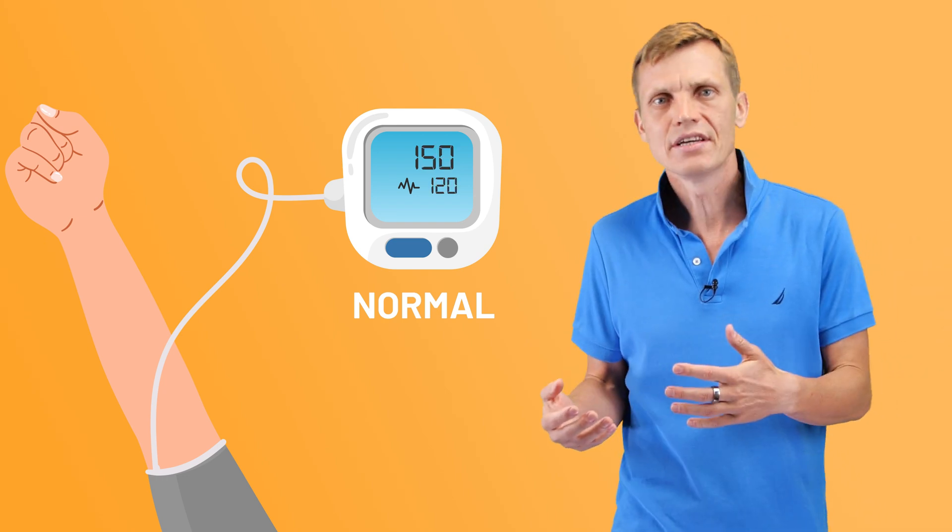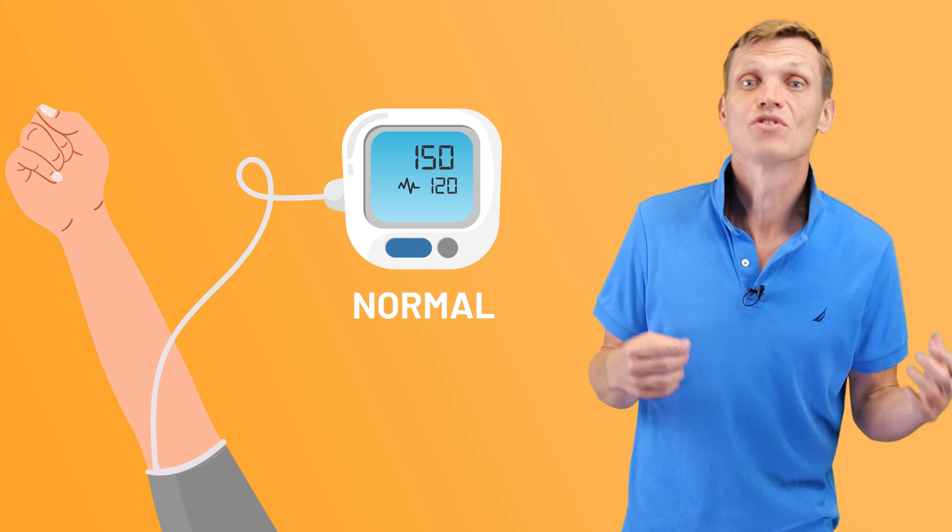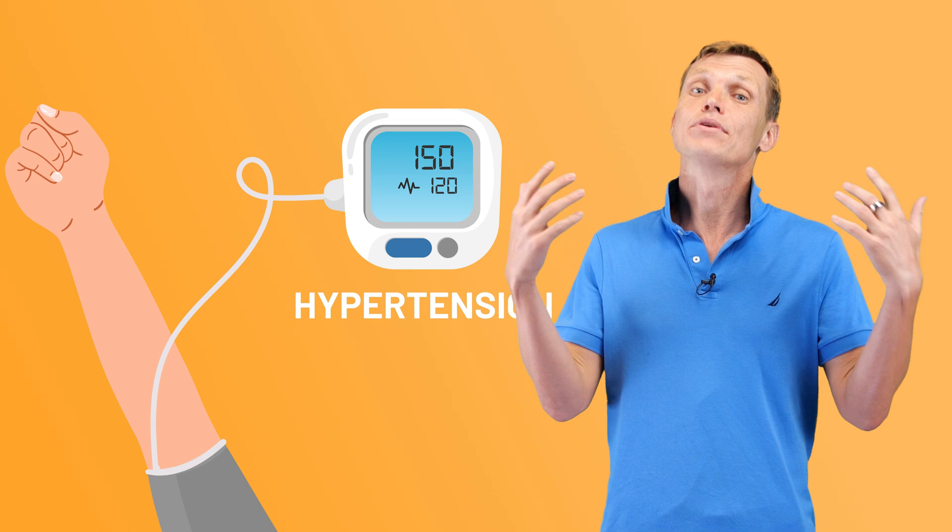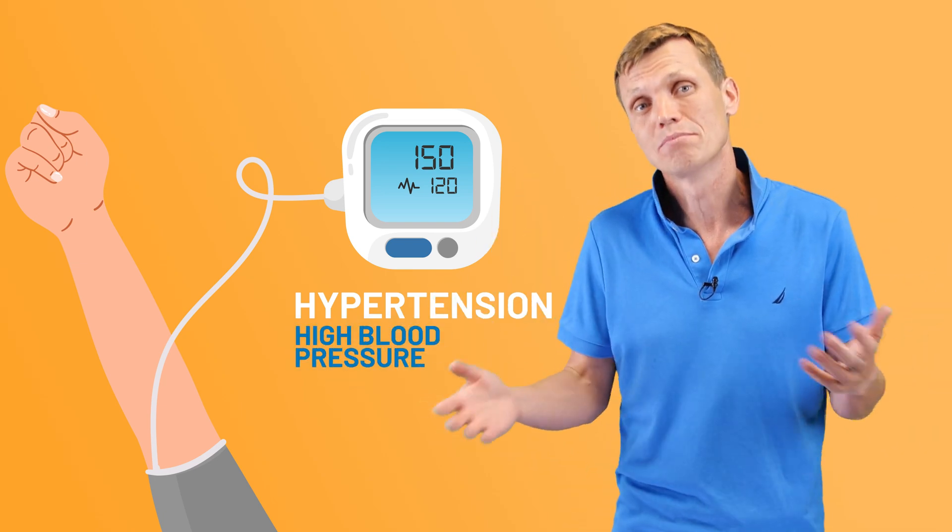The blood pressure 120 over 80 or below is considered normal. If it's higher than 120 over 80, then you run the risk of falling victim to the silent killer, or hypertension, or simply high blood pressure.